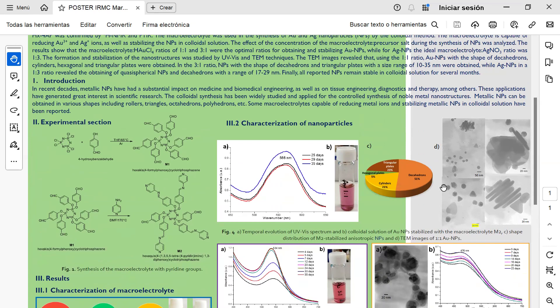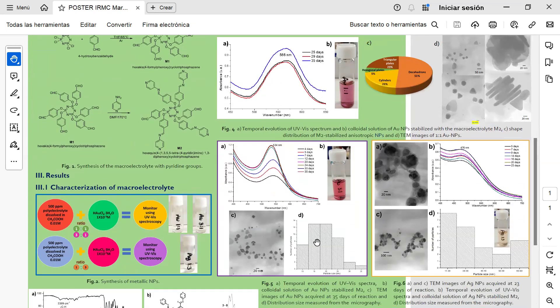In the case of the 3:1 ratio, nanoparticles with the shape of decahedron and triangular plates with a size between 10 and 35 nanometers were obtained.